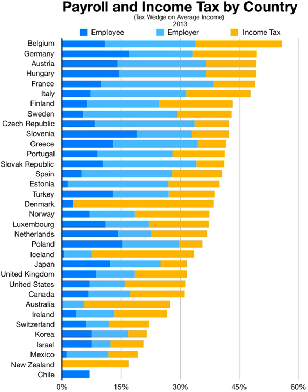Residents are generally taxed differently from nonresidents. Few jurisdictions tax nonresidents other than on specific types of income earned within the jurisdiction. Residents, however, are generally subject to income tax on all worldwide income. A very few countries, notably Singapore and Hong Kong, tax residents only on income earned in or remitted to the country. Residents is often defined for individuals as presence in the country for more than 183 days. Most countries base residence of entities on either place of organization or place of management and control. The United Kingdom has three levels of residence.